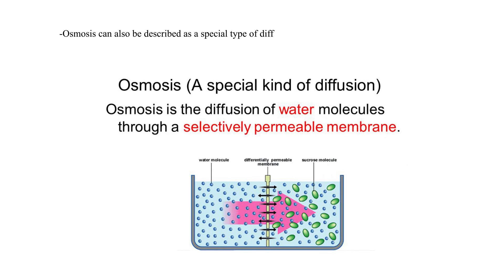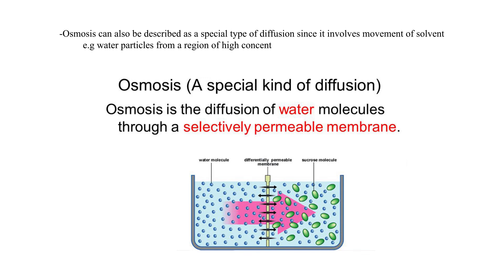Osmosis can also be described as a special type of diffusion, since it involves movement of solvent — for example, water particles — from a region of high concentration to a region of low concentration.